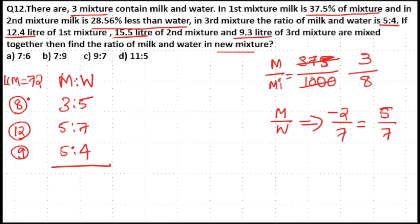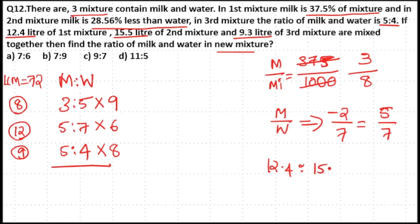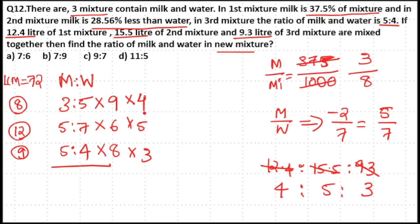The first ratio has 8 total parts; to make it 72 parts, multiply by 9. The second ratio has 12 total parts; to make it 72, multiply by 6. The third ratio has 9 total parts; multiply by 8 to get 72. The volume of the mixtures is 12.4 to 15.5 to 9.3. Since 3.1 into 4 is 12.4, 3.1 into 5 is 15.5, and 3.1 into 3 is 9.3, the simplified volume ratio is 4 to 5 to 3. So multiply the first ratio by 4, the second by 5, and the third by 3.